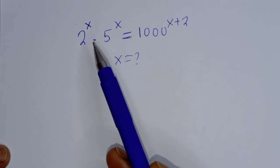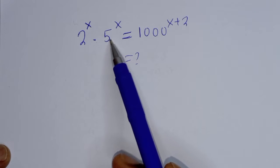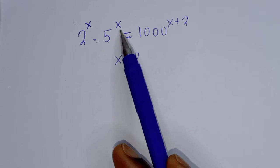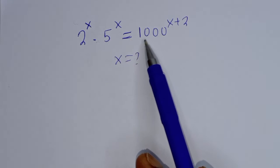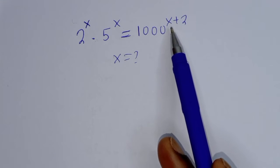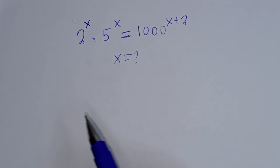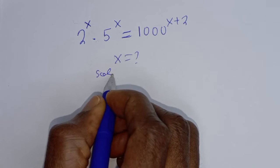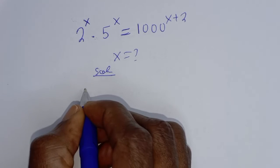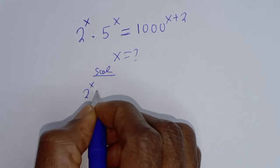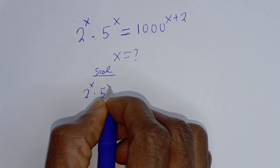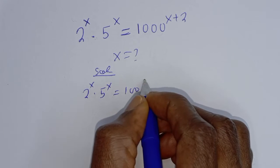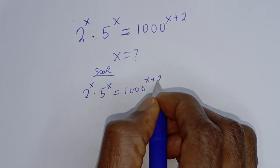Hello, how to solve for s from this given math problem. 2 raised to power s multiplied by 5 raised to power s is equal to 1000 raised to power s plus 2. Solution.